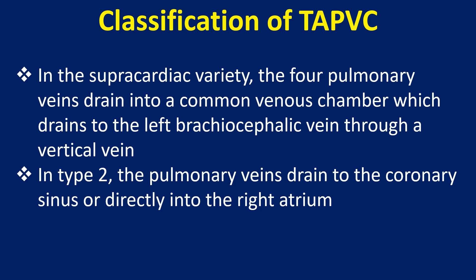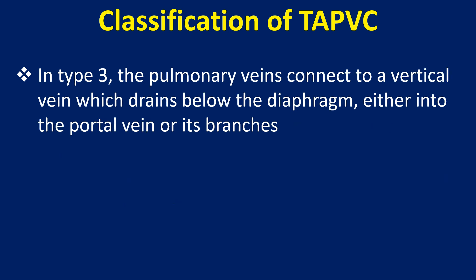In type 2, the pulmonary veins drain to the coronary sinus or directly into the right atrium. In type 3, the pulmonary veins connect to a vertical vein which drains below the diaphragm, either into the portal vein or its branches.